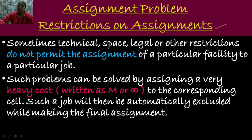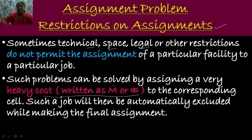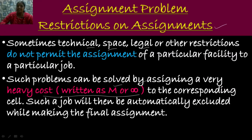Sometimes due to technical space or some other reason, we cannot permit the assignment of a particular job to a particular facility. Such type of problem can be easily solved by assigning a very heavy cost — either M or infinity — to the corresponding cell. Such a job will then be automatically excluded while making the final assignment, and we proceed as usual in case of a balanced assignment problem.